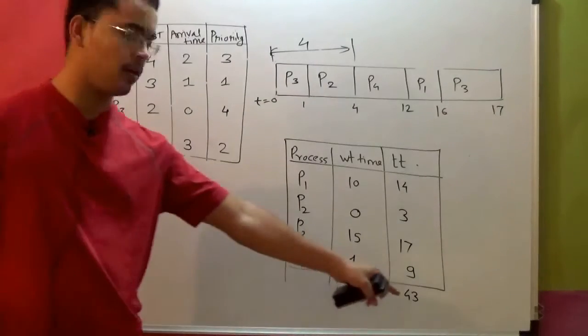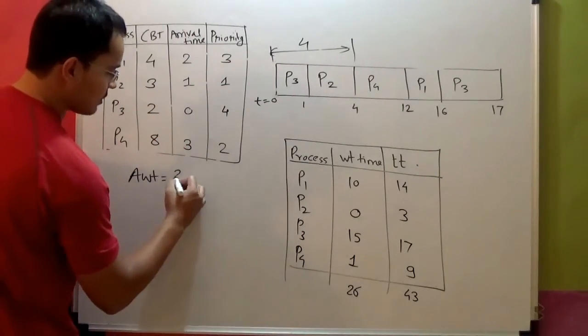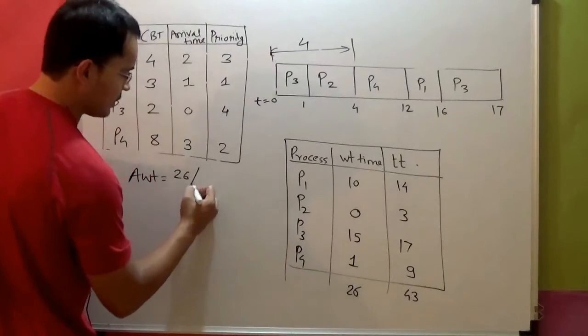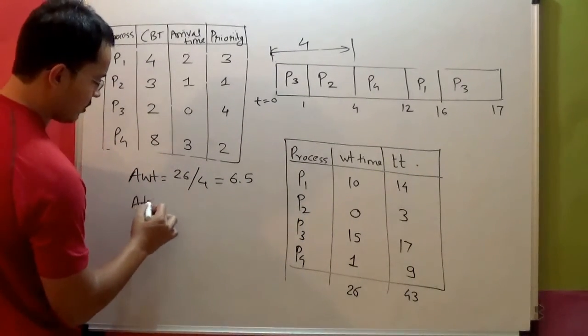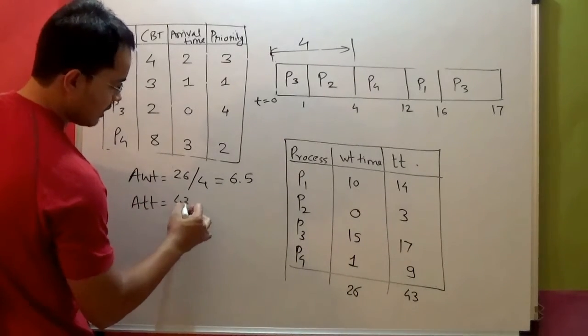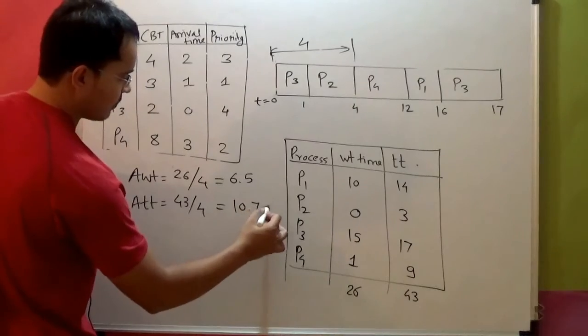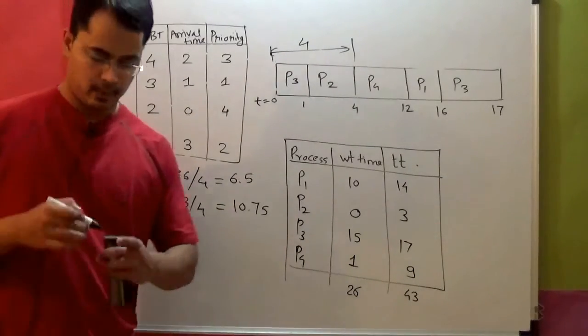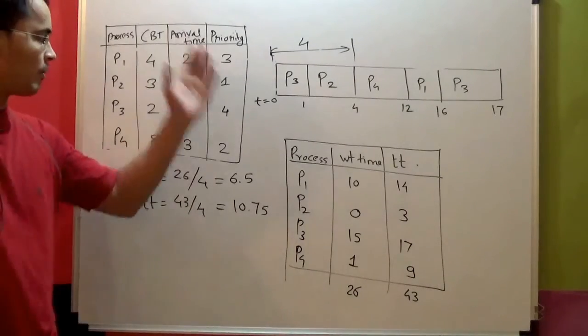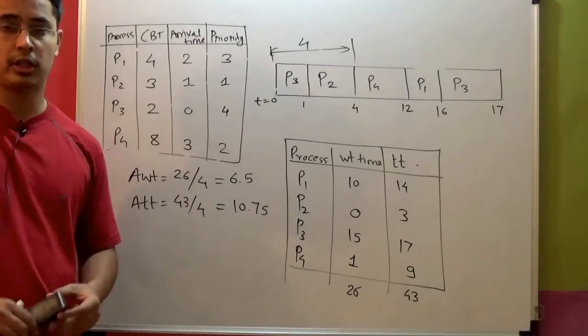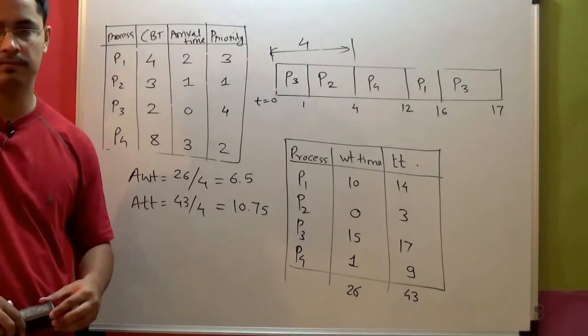43 is the total of turnaround time, and 26 for waiting time. So average waiting time is 26 divided by the number of processes which is 4, that is 6.5. And average turnaround time is total turnaround time is 43 divided by 4, that is 10.75. So this way we have found the average waiting time and average turnaround time for processes using priority scheduling. This time around we used preemptive because arrival times were given. Thank you.